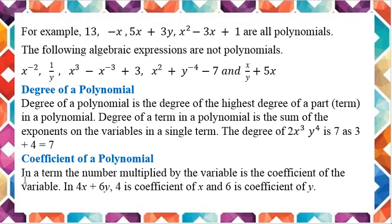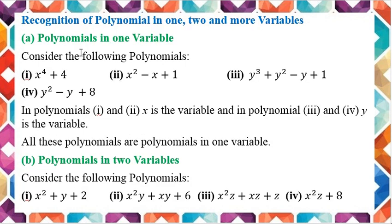Coefficient of a polynomial. In a term, the number multiplied by the variable is the coefficient of that variable. For example, in 4x plus 6y, 4 is the coefficient of x because it is multiplying with x, and 6 is the coefficient of y because 6 is multiplying with y.